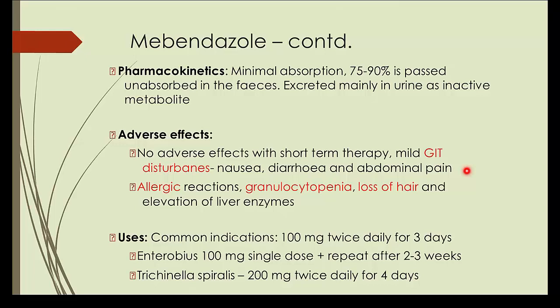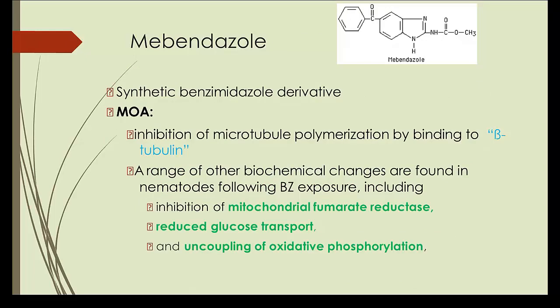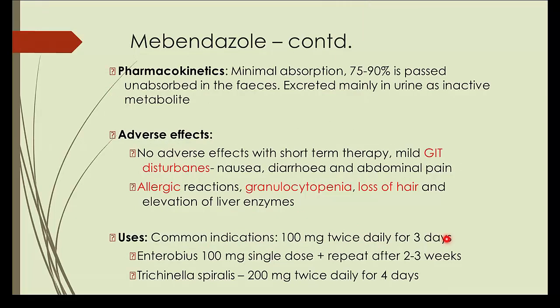Uses: common indication is 100 mg twice daily for 3 days for most nematode infections. For Enterobius vermicularis, 100 mg single dose repeated after 2 to 3 weeks. Remember, in almost all cases we use albendazole rather than mebendazole — albendazole is the drug of choice in most cases. But for Enterobius, mebendazole is better than albendazole. If the examiner asks where mebendazole works better than albendazole, answer Enterobius. It can also be used in Trichinella spiralis.